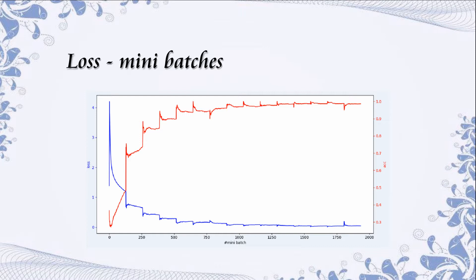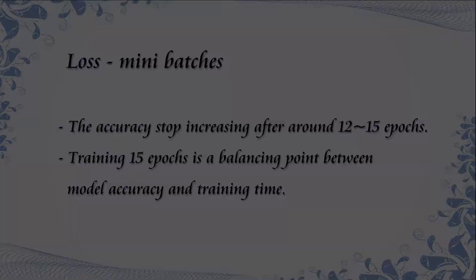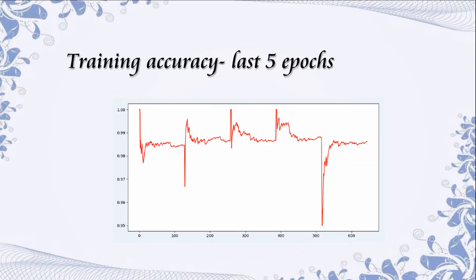Regarding the training result, the loss decreased from around 4 to 0.3, and the accuracy increased to around 99% after 15 epochs. The loss and accuracy become stable after around 10 to 12 epochs, so we believe 15 epochs is sufficient. Looking at the accuracy chart in detail, during the last five epochs the accuracy is stable at around 0.985. Some unstable accuracy readings may be caused by the calculation of accuracy between epochs.